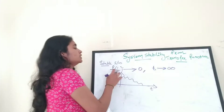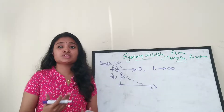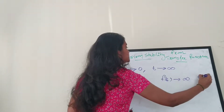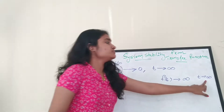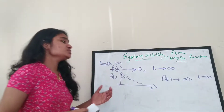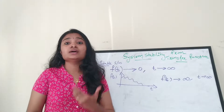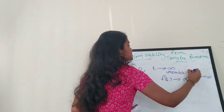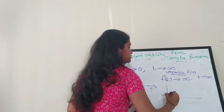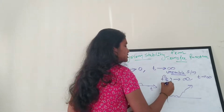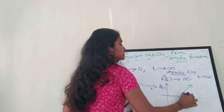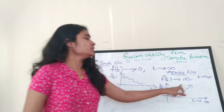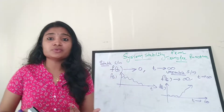Now what is an unstable system? For a stable system, f(t) tends to zero as t tends to infinity. For an unstable system, f(t) tends to infinity as t tends to infinity — if the function is also going to infinity, such a system is called an unstable system. The graph will show f(t) going to infinity as time tends to infinity.